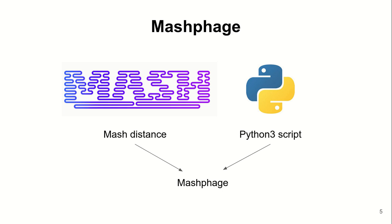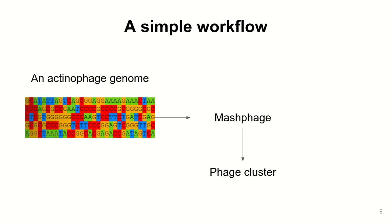We did that by varying the sketch size and the k-mer length. Measuring sensitivity and specificity of the resulting 102 different sketches, we found that a sketch size of 1,500 k-mers and a k-mer length of 32 base pairs performed best, with 100% specificity and 95% sensitivity.